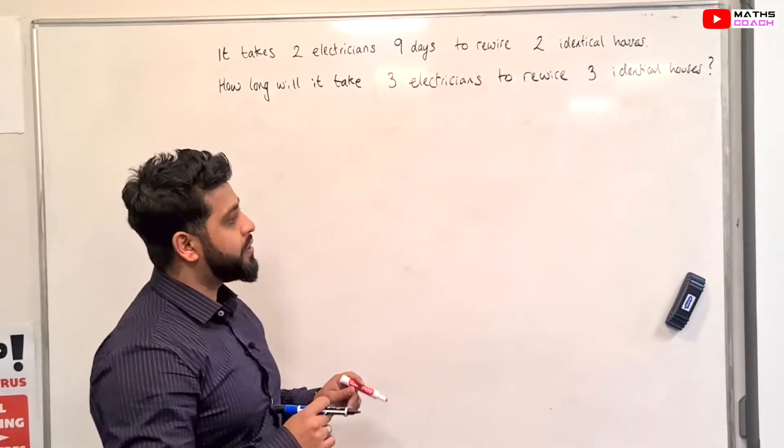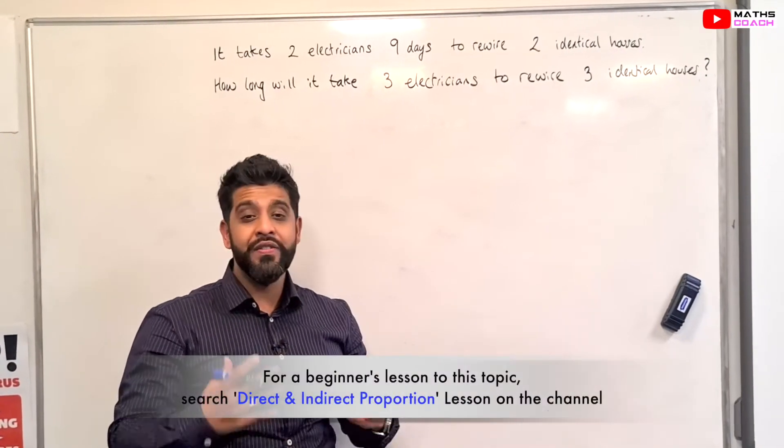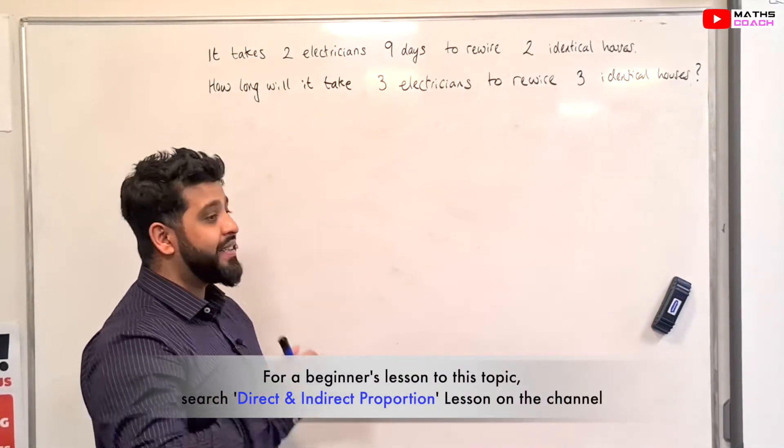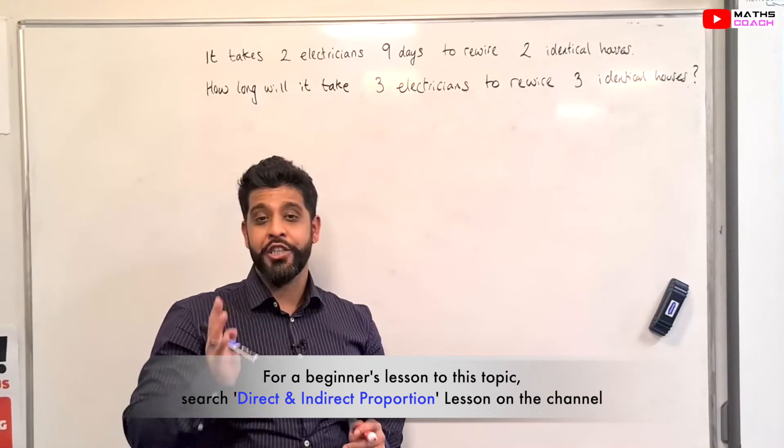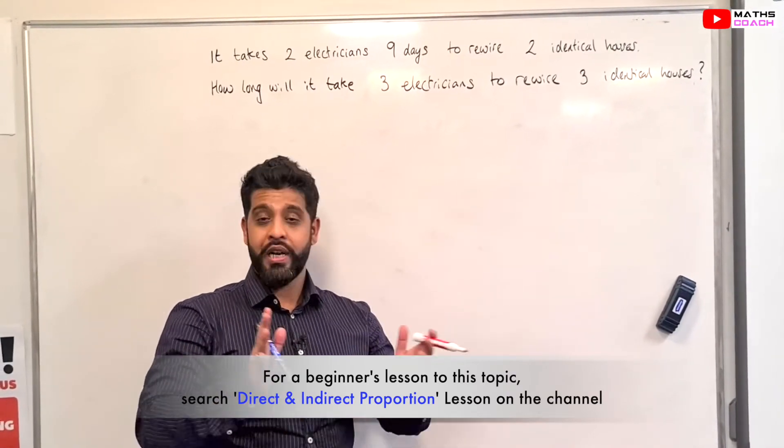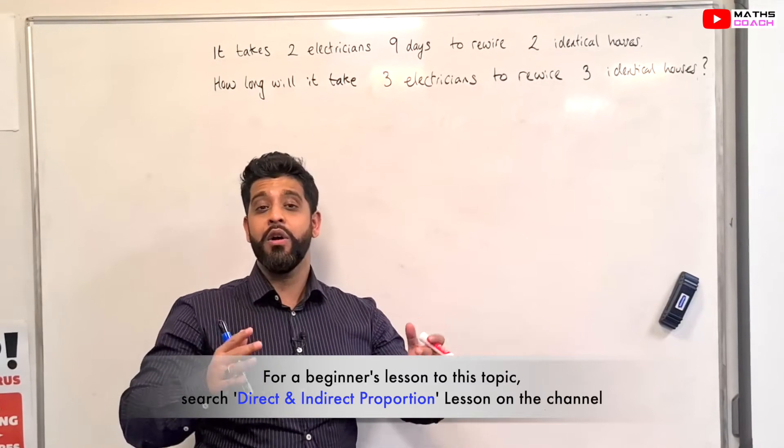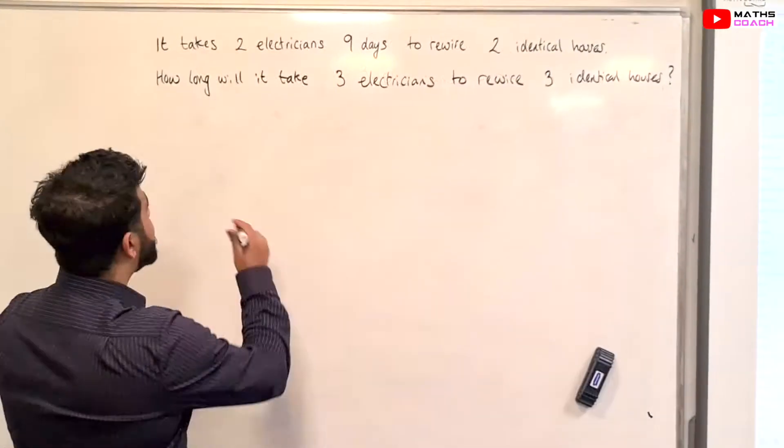Now, the difference between this question and the ones you've previously done is that you have three things which are changing. Whereas in the previous indirect or direct proportion questions, there were two things that were changing. So, let's write this down.